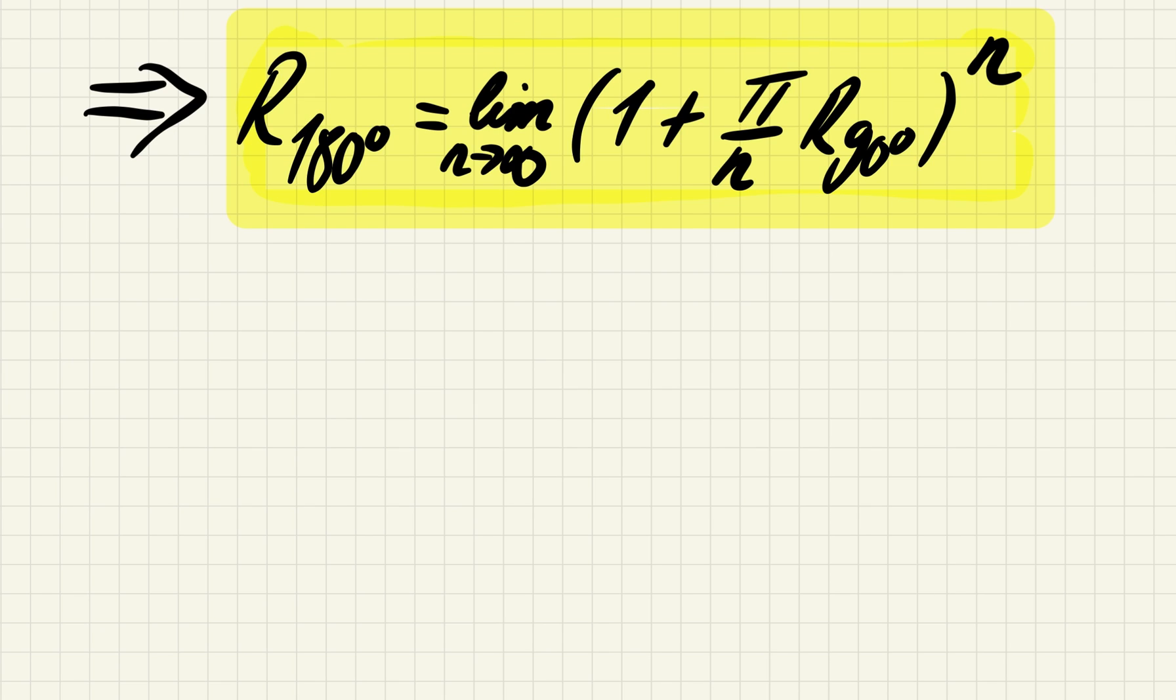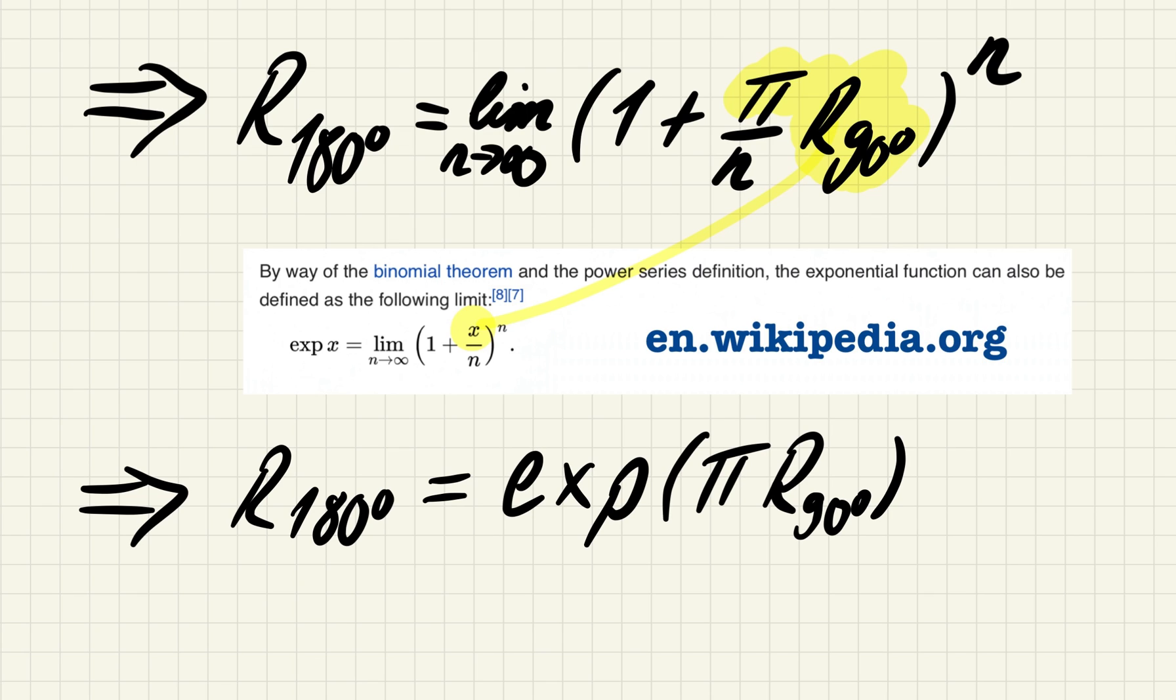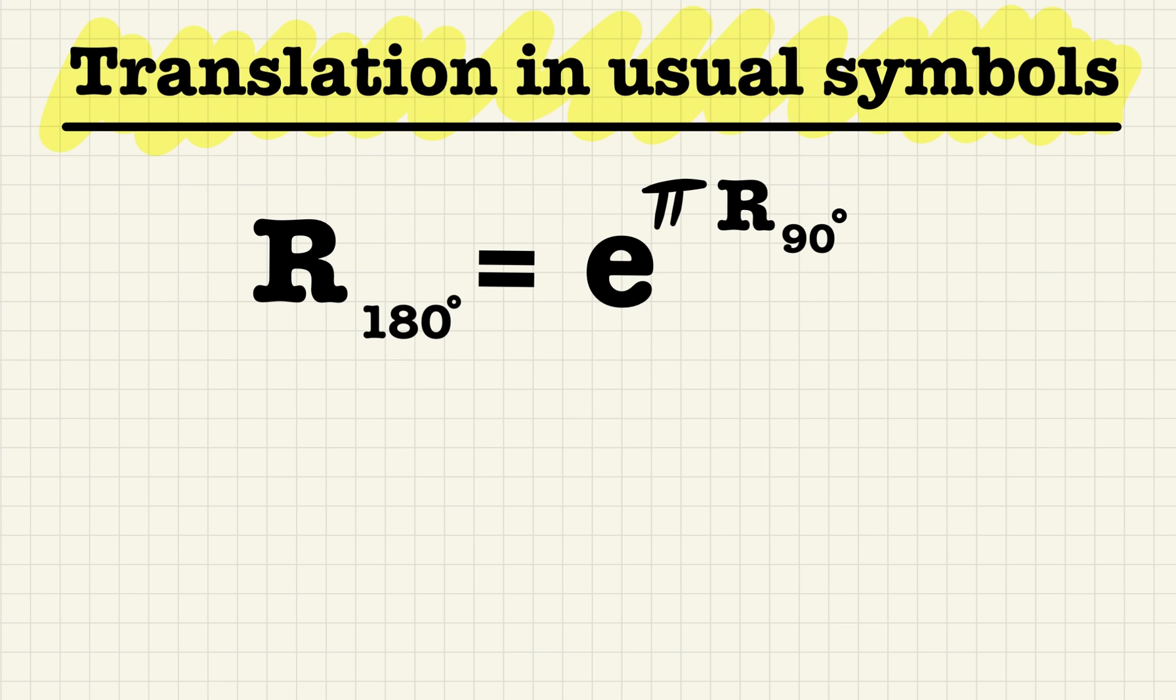But maybe take a minute and try it for yourself. That's enough. Let's check out the internet for help. Using the result from Wikipedia, we can write... Or if we are really lazy, we write E to the Pi rotation of 90 degrees. So now that we got everything together, just enjoy.